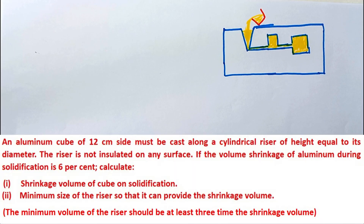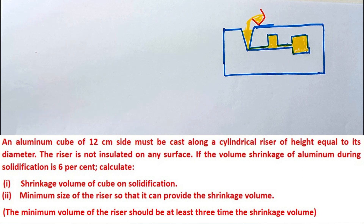In this problem, an aluminium cube of 12 cm size has to be cast along a cylindrical riser of height equal to its diameter. The riser is not insulated on any surface. If the volume shrinkage of aluminium during solidification is 6%, calculate: first, the shrinkage volume of the cube on solidification; second, the minimum size of the riser so that it can provide the shrinkage volume, given that the minimum volume of the riser should be at least 3 times the shrinkage volume.